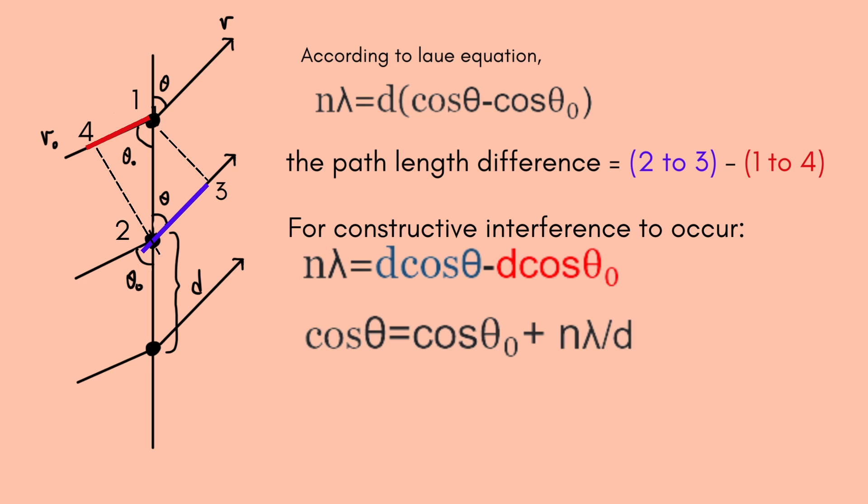First we isolate the cosine theta term on one side of the equation, and then if we take the arc cosine of the argument here, cosine of theta naught plus n lambda over d, that is known as the Laue equation. And we can use this equation to see the angles at which constructive interference might occur.